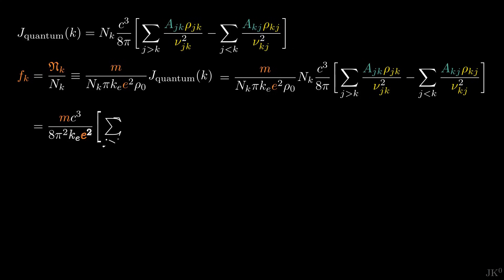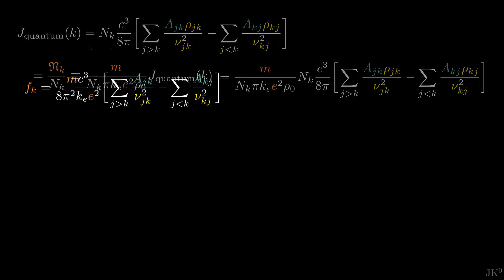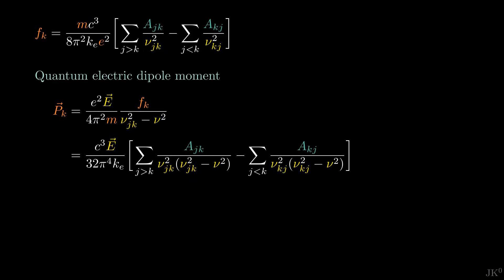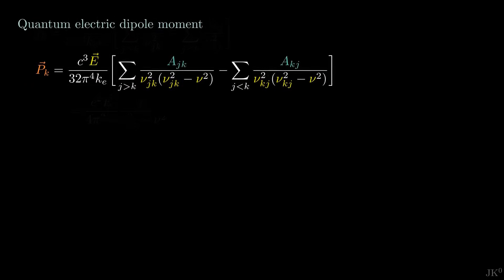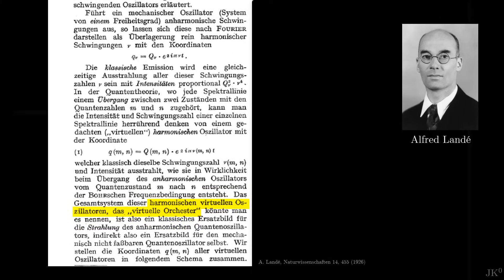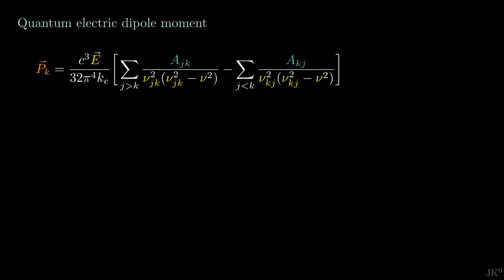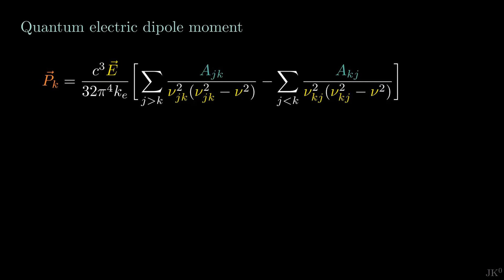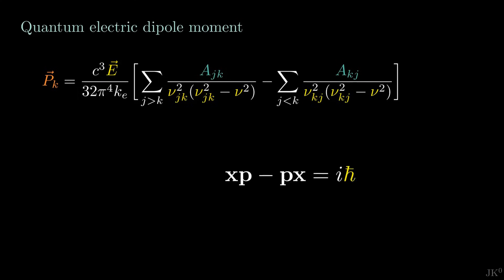Writing the B coefficients in terms of the A coefficients using Einstein's relations, we can calculate the oscillator strength following Ladenburg's method. Plugging in and simplifying common factors, we finally determine the quantum electric dipole moment and rediscover Kramers' dispersion formula. Alfred Landé referred to these objects as an orchestra of virtual oscillators. Notice the structure of this formula: if you have studied quantum mechanics, you will recognize the structure of the canonical commutation relation — we have two labels minus the same labels in the opposite order. I will soon show you the true origin of the famous commutator, but you can see how this is beginning to take shape.